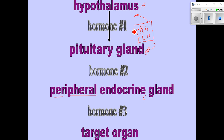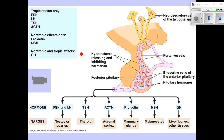One example we already saw: thyroid-releasing hormone is produced by the hypothalamus and causes the anterior pituitary to produce and release what is called thyroid-stimulating hormone, which then tells the thyroid gland to produce various thyroid hormones, which then have various functions throughout the body. Looking at the anterior pituitary hormones: these ones get a stimulus from the gonadotropin-releasing hormone from the hypothalamus. TSH gets a stimulus from thyroid-releasing hormone. ACTH gets a stimulus from CRH — corticotropic-releasing hormone.